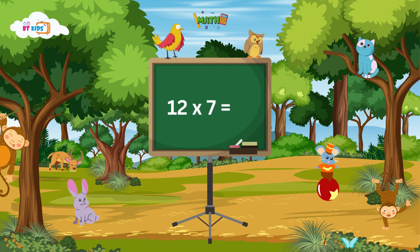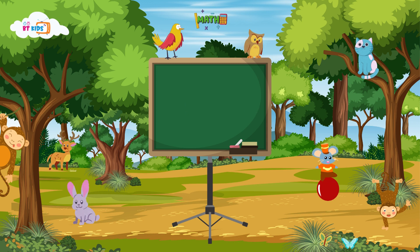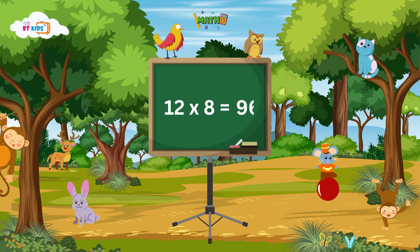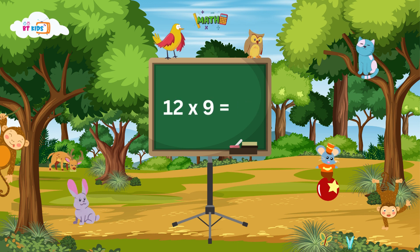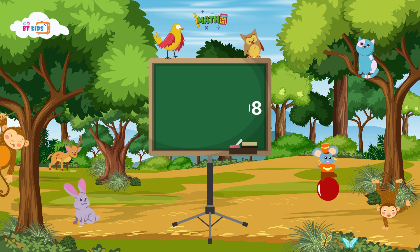12 sevens are 84. 12 eights are 96. 12 nines are 108.